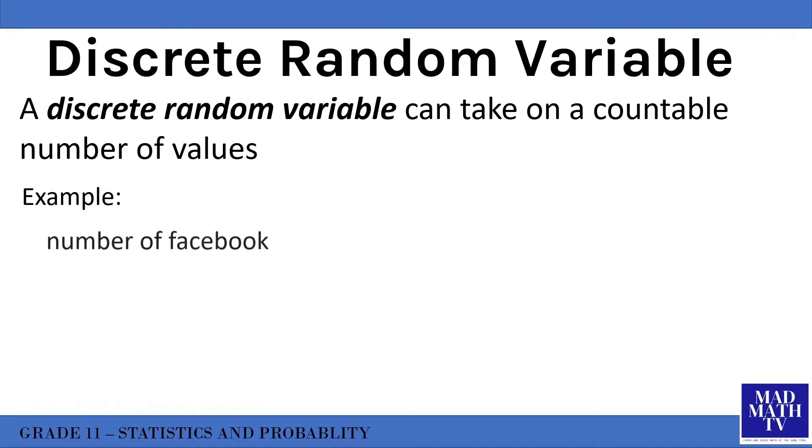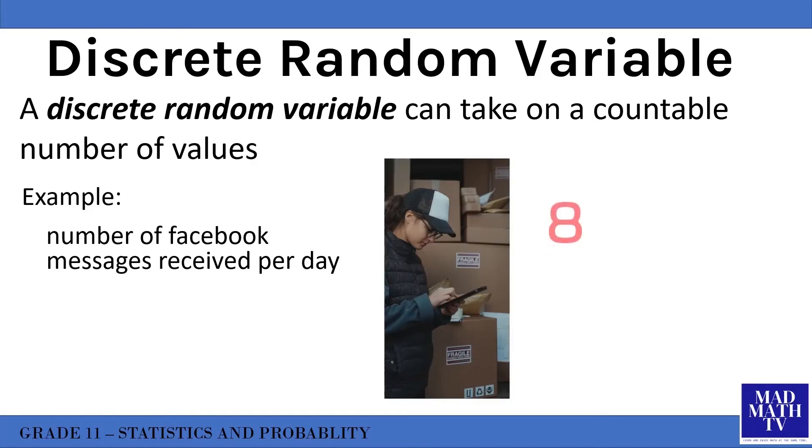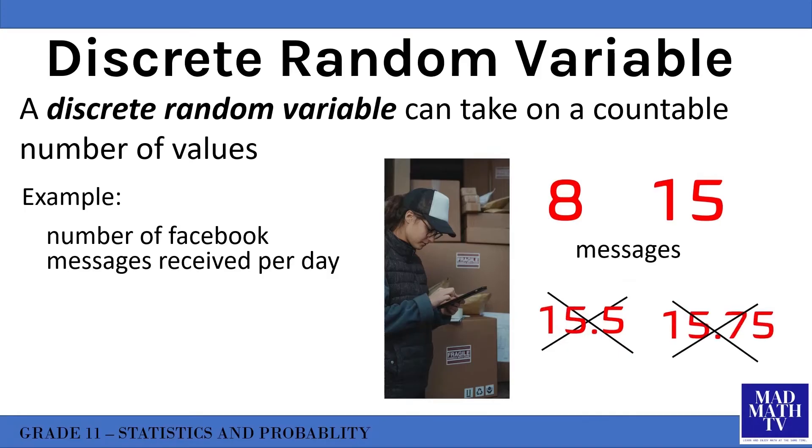The number of Facebook messages received per day is an example of a discrete random variable. You may receive 8 Facebook messages a day or 15 messages a day, but you can never receive 15.5 messages or 15.75 messages. It's not even possible - there's no 0.5 or 0.75 of a message. It should be an integer.